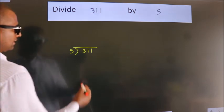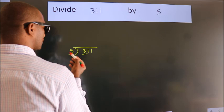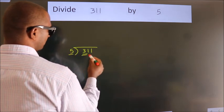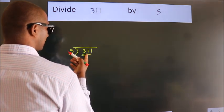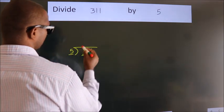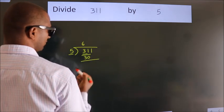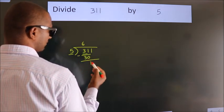Next, here we have 3, here 5. 3 is smaller than 5. So we should take two numbers, 31. A number close to 31 in the 5 table is 5 times 6, 30. Now we should subtract. We get 1.